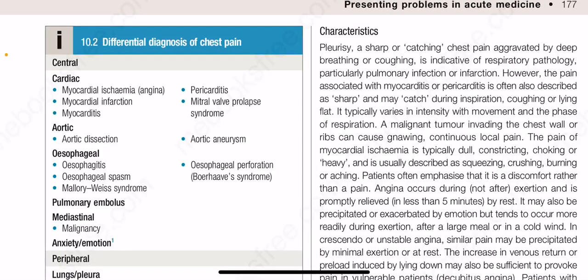Here is the differential diagnosis of chest pain. For central chest pain the causes are cardiac, aortic, esophageal, pulmonary embolus, mediastinal, anxiety or emotion. Among the cardiac causes are myocardial ischemia which is called angina, myocardial infarction, myocarditis, pericarditis, and mitral valve prolapse syndrome.